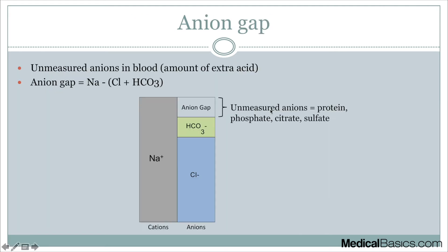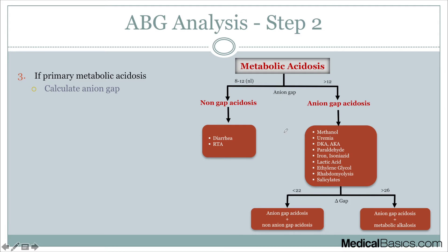The anion gap equation is: sodium minus chloride minus bicarb. It essentially accounts for all the unmeasured anions — protein, phosphate, citrate, sulfate, and others. If the anion gap is high, meaning there are anions not accounted for, it's due to some other cause — we have an anion gap acidosis. The mnemonic MUDPILERS covers the causes for a high anion gap. If the anion gap is normal, we start thinking about renal tubular acidosis or diarrhea — a much smaller list. There's also an osmolar gap to consider, but I like to think of it simply: a high anion gap means anion gap acidosis — something within the MUDPILERS — and you have to think about the clinical picture.